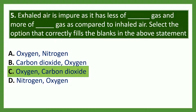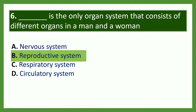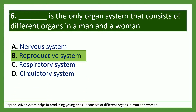That is the only organ system that consists of different organs in a man and a woman. Option A — nervous system; option B — reproductive system; option C — respiratory system; option D — circulatory system. The answer is the reproductive system. The reproductive system helps in producing young ones and consists of different organs in man and woman.